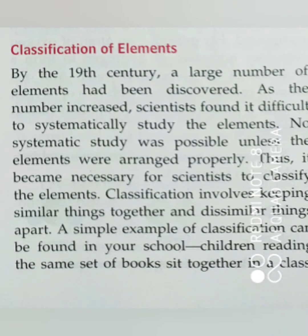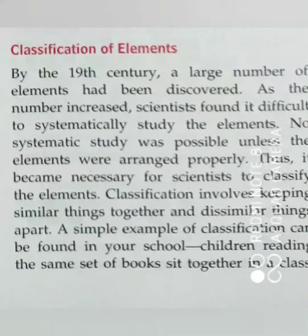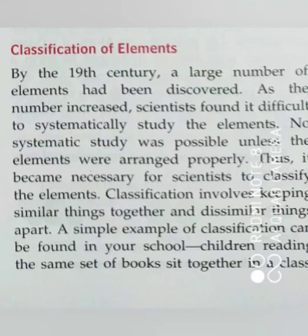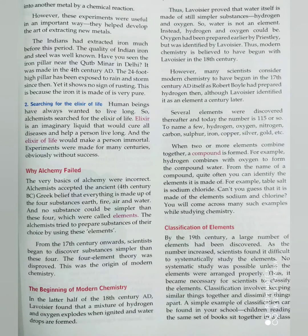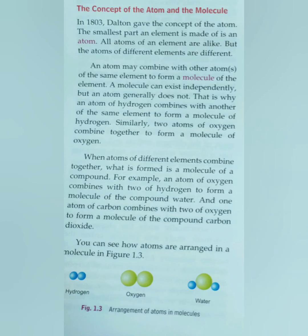After the 19th century, scientists began to classify the elements. A scientist named Mendeleev succeeded in classifying the elements into a table called the periodic table of elements. Students, some important questions for your exam: you must know the two aims of alchemy, and you must know the discoveries made by the different scientists. Moving on to the next page — page number 4.